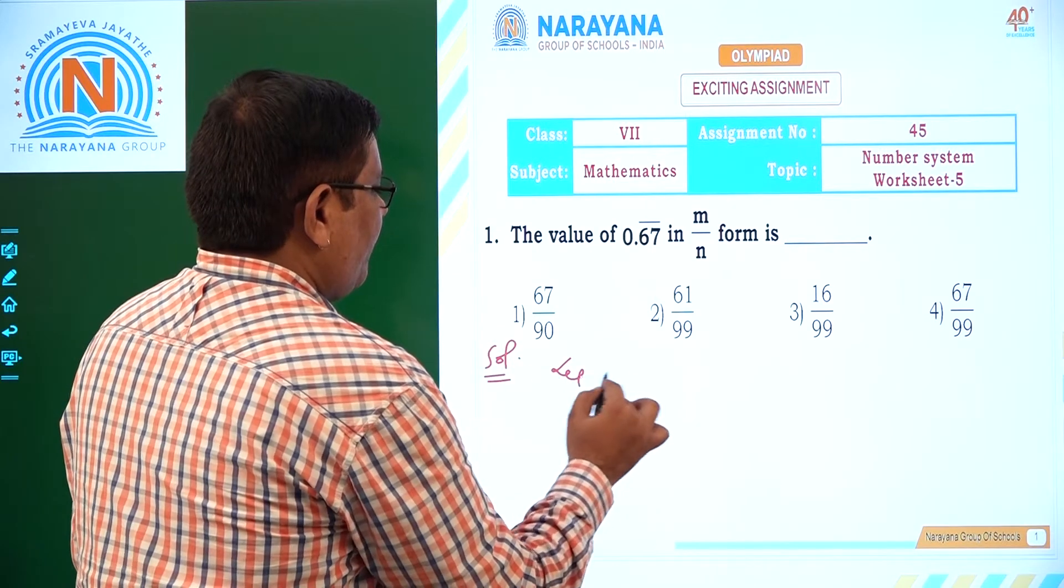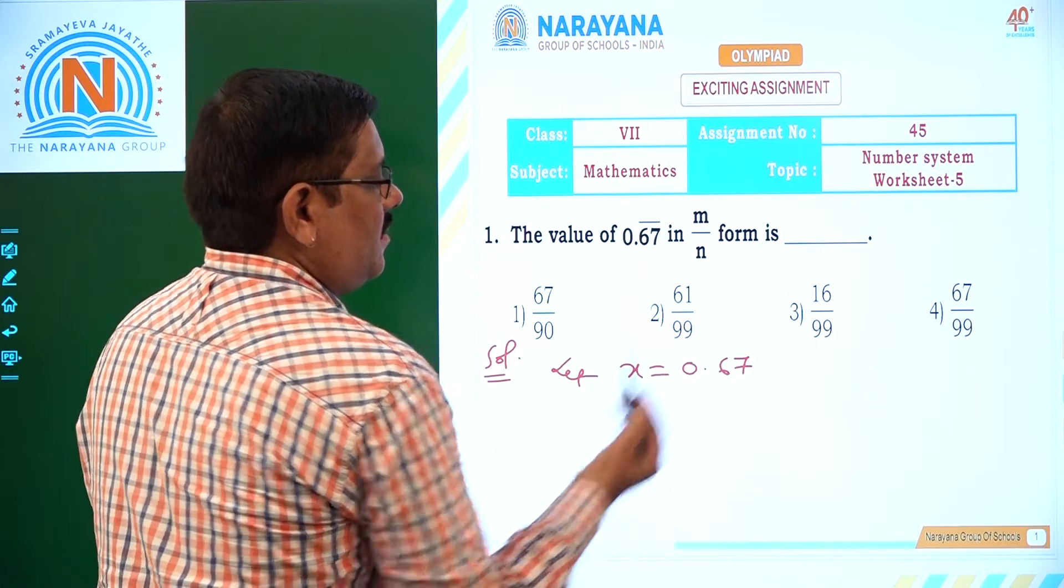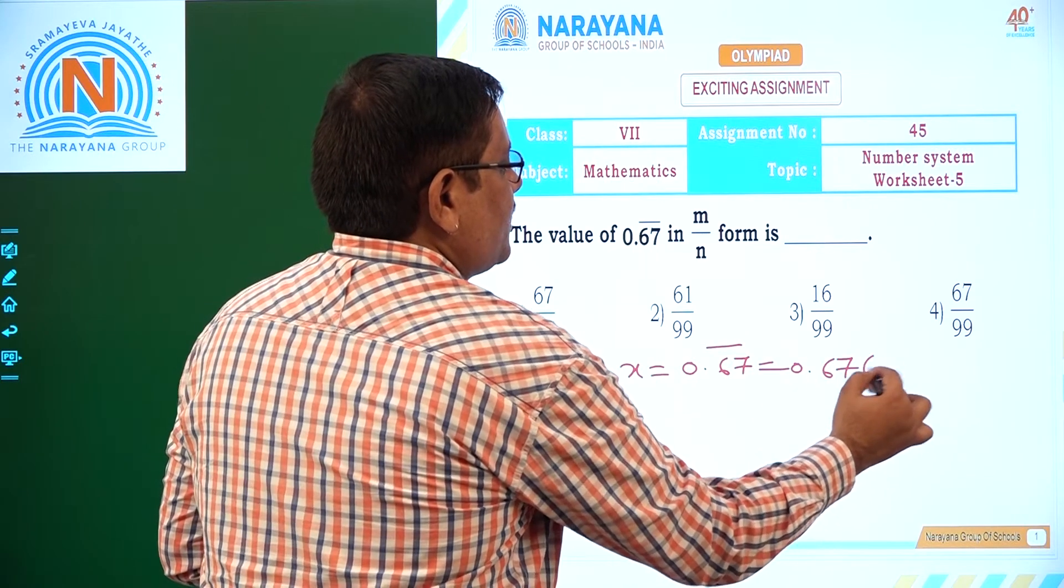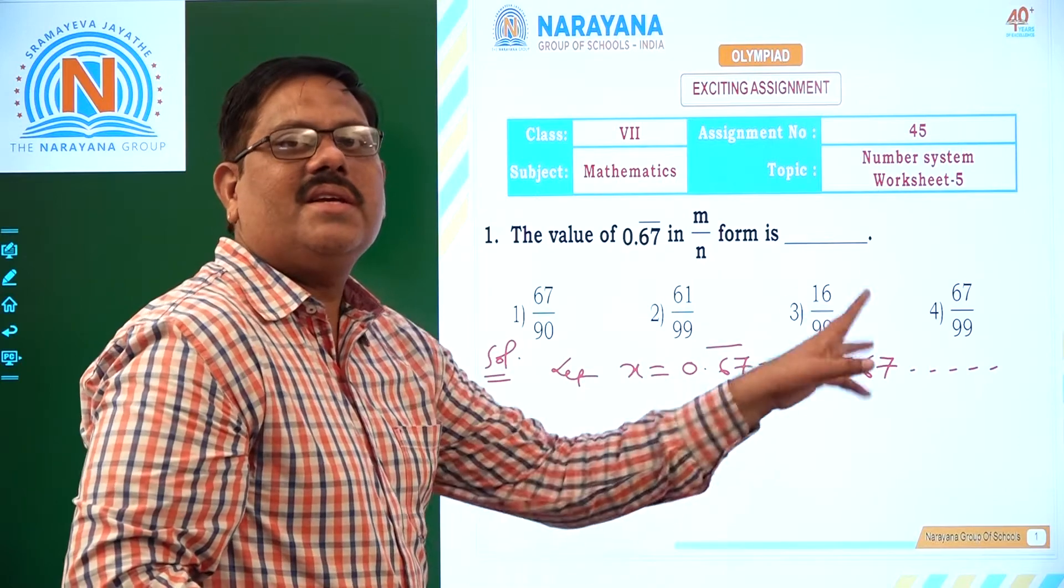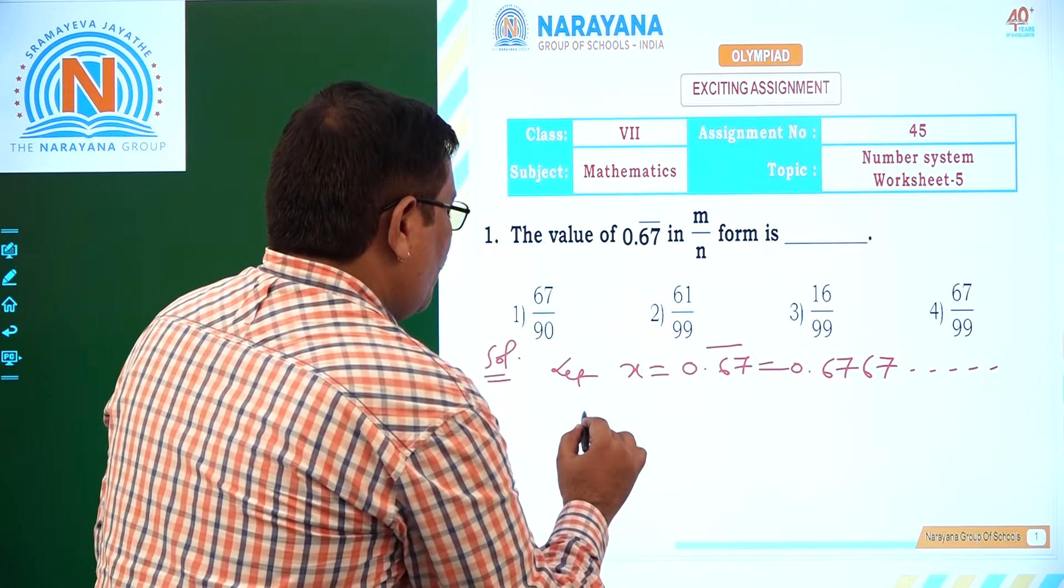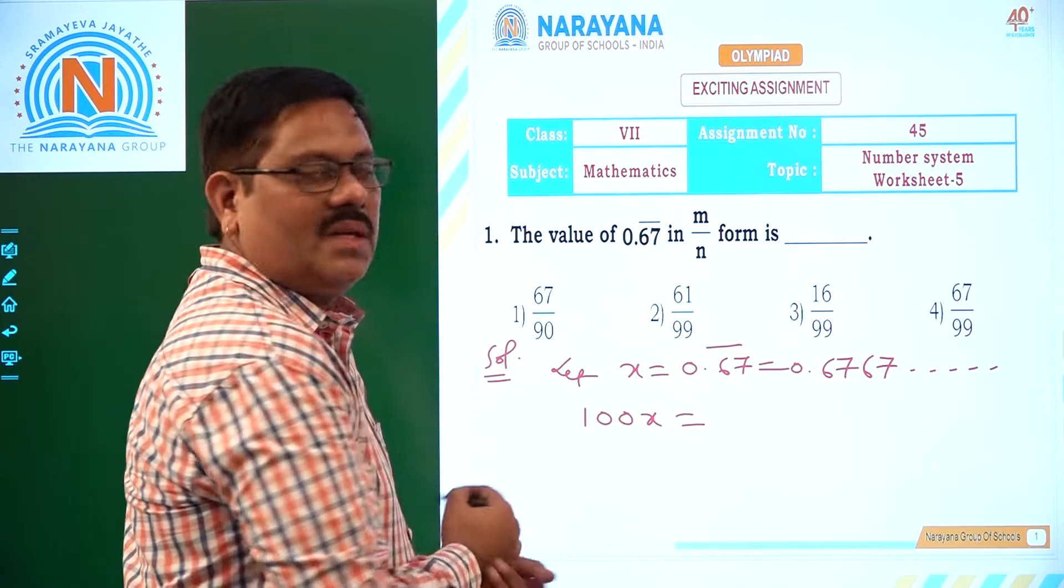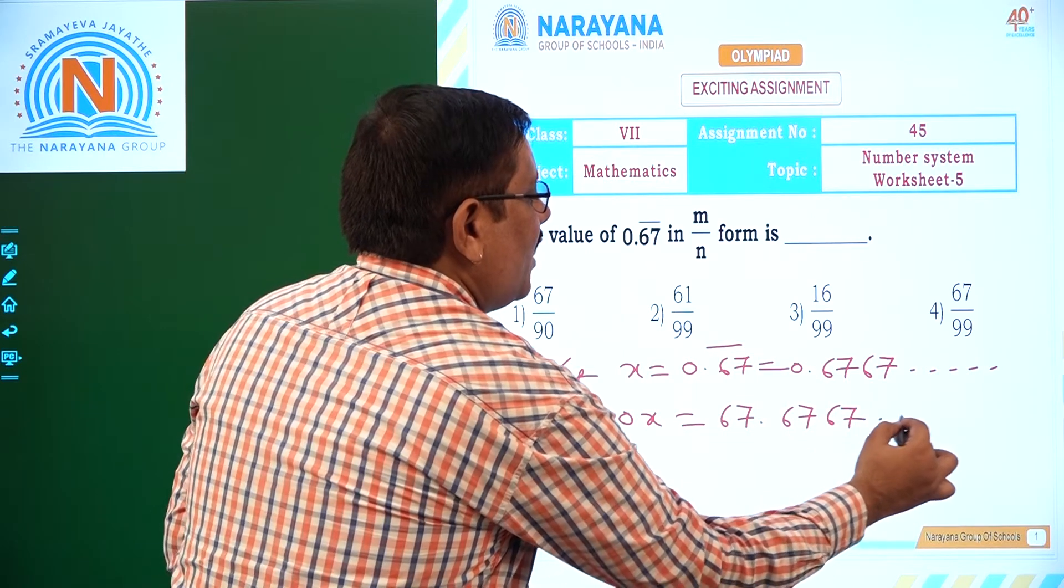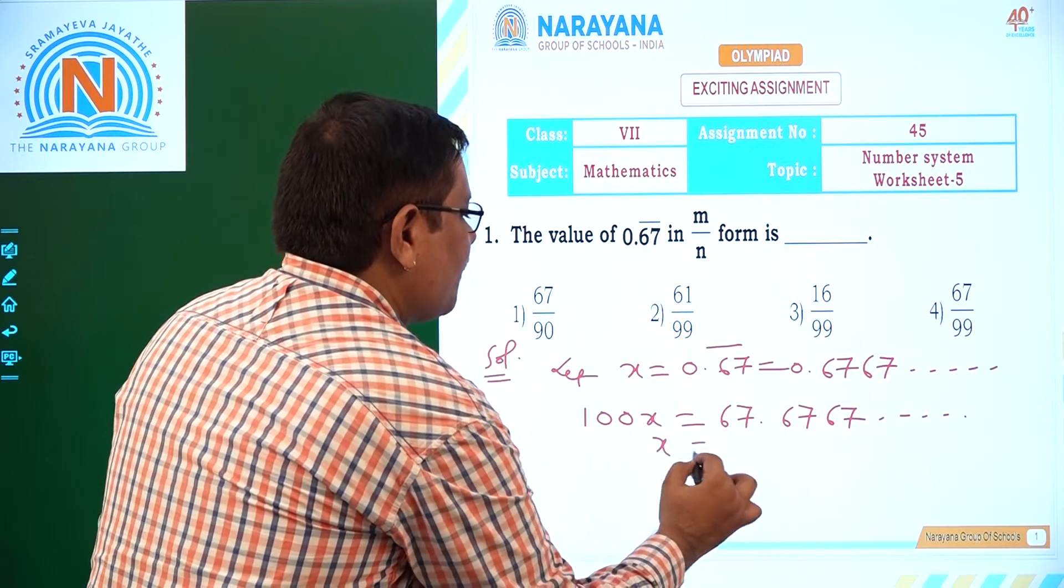Let us take the given decimal as x, that is 0.67 bar, nothing but 0.6767. Here the period is 67 and periodicity is 2. As its periodicity is 2, what to do? You just multiply both the sides with 100. 100x is what? 67.6767 so on. Now let us subtract x from this.